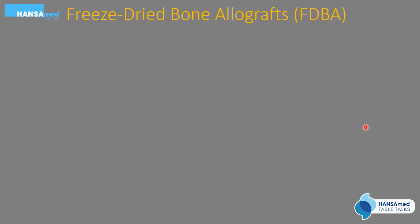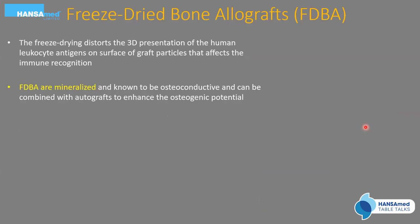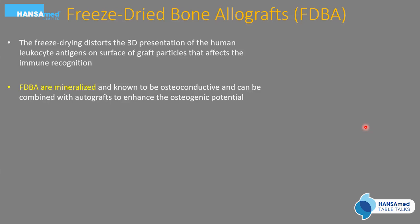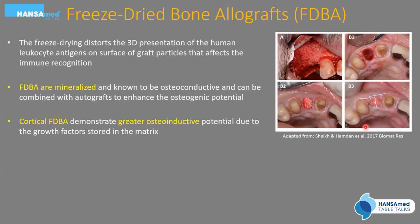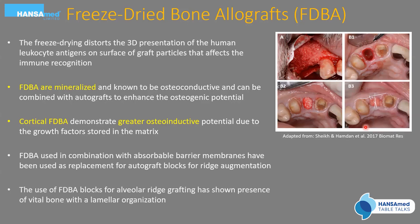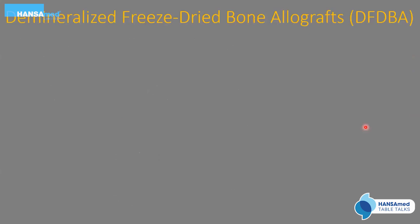Cortical FDBA demonstrates the highest osteoinductive potential due to growth factors stored in its matrix. FDBA can be used with absorbable barrier membranes and as a replacement for autograft blocks for ridge augmentation. FDBA blocks for alveolar ridge grafting have shown the presence of vital bone with lamellar organization — as opposed to woven bone, lamellar bone is the organized type we want. DFDBA differs in that these are demineralized, and they've been used alone or in combination with FDBA and autografts.